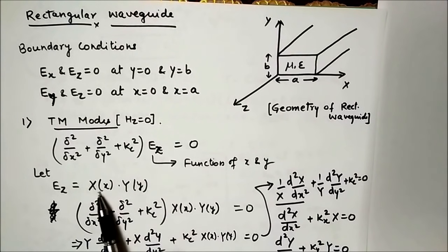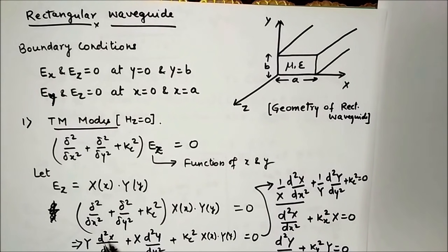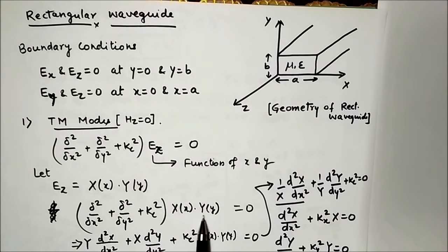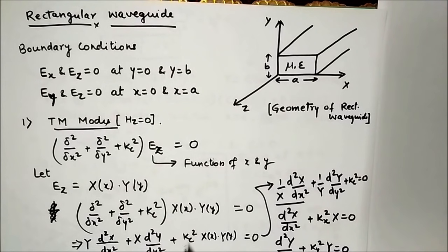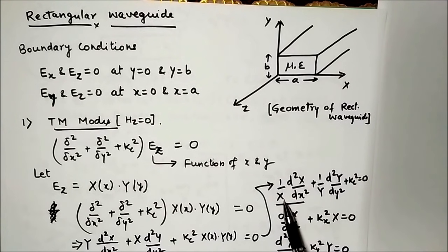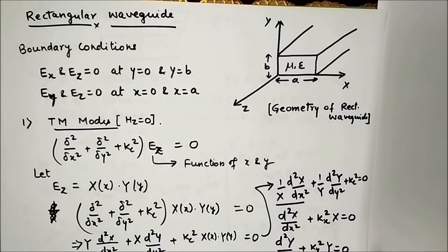If we replace Ez with X·Y in the Helmholtz equation, we get Y·(d²X/dx²) + X·(d²Y/dy²) + Kc²·X·Y = 0. Dividing both sides by X·Y gives (1/X)(d²X/dx²) + (1/Y)(d²Y/dy²) + Kc² = 0, and now we can apply separation of variables.